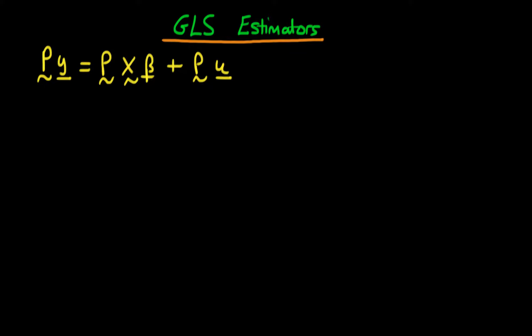In this video we're going to derive the transformation matrix P which forms our GLS estimators, which happen to be BLUE. We took our original model and multiplied both sides by this as yet unknown transformation matrix P.